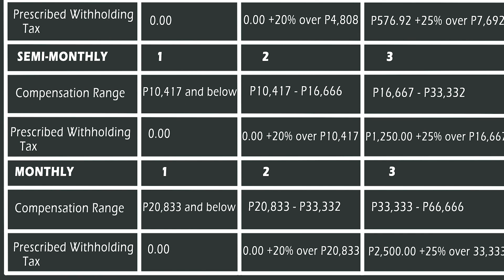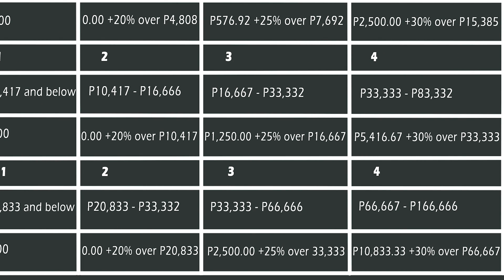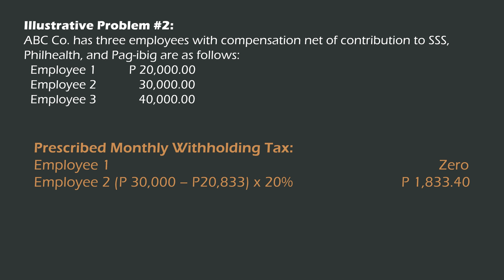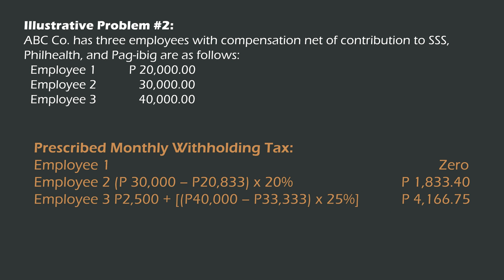For Employee 3 with compensation of 40,000, this amount falls within the third bracket. To compute the withholding tax, from 40,000 deduct 33,333, giving an amount of 6,667. Multiply that by 25%, so the amount will be 1,666.75. This shall be added to the predetermined amount of 2,500, therefore the withholding tax of Employee 3 will be 4,166.75.